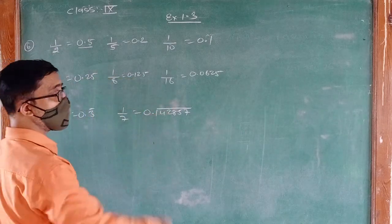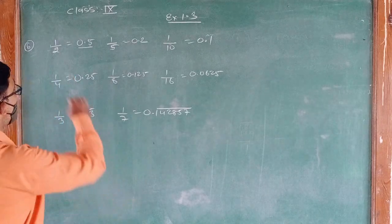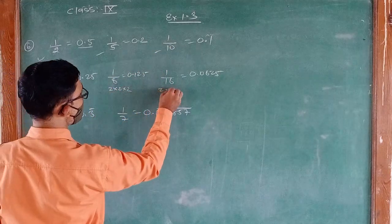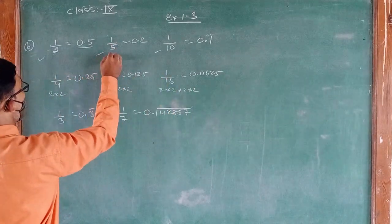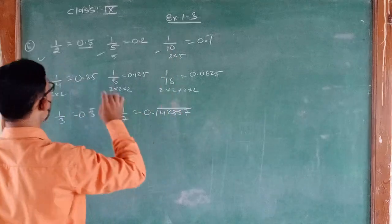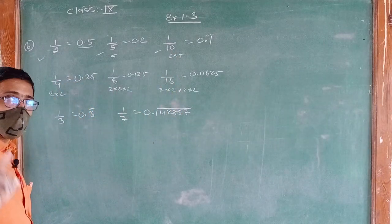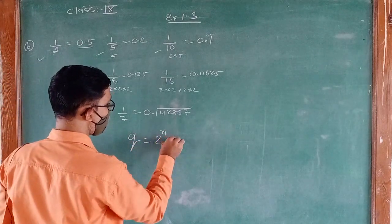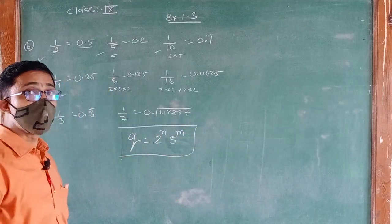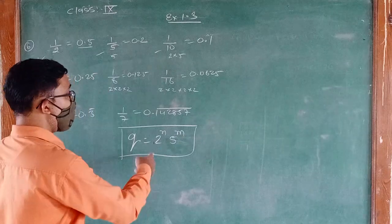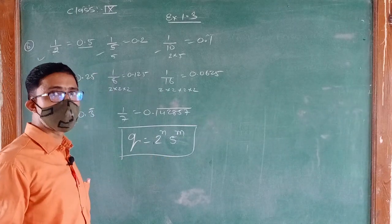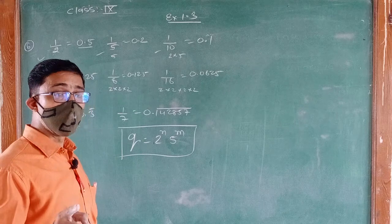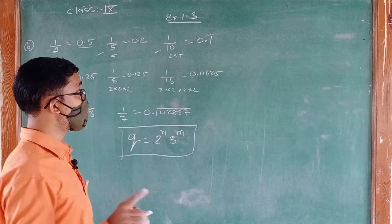Now look at these examples. The terminating ones have denominators: 2, then 2×2, then 2×2×2 — the factors of 2 are increasing — then 5, then 2×5. So whenever the denominator Q is in the form 2 raised to n and 5 raised to m, the decimal expansion will be terminating. But if there are factors other than 2 and 5, then it will be a non-terminating repeating expansion.